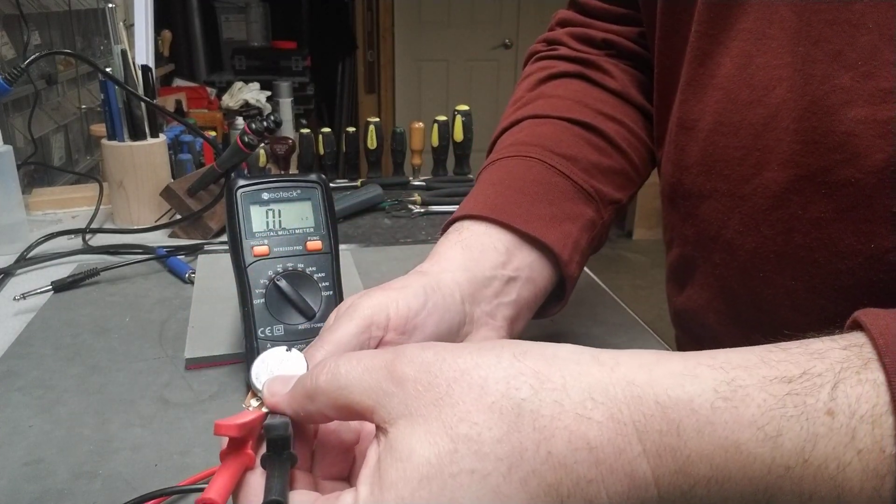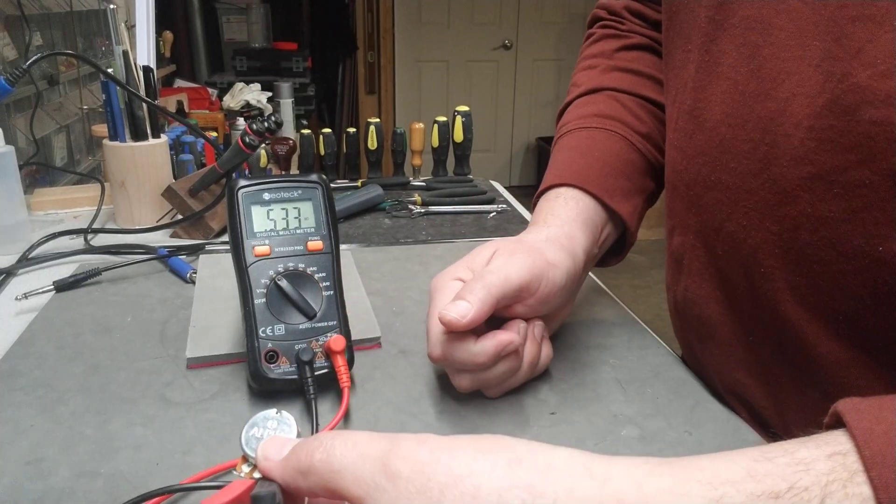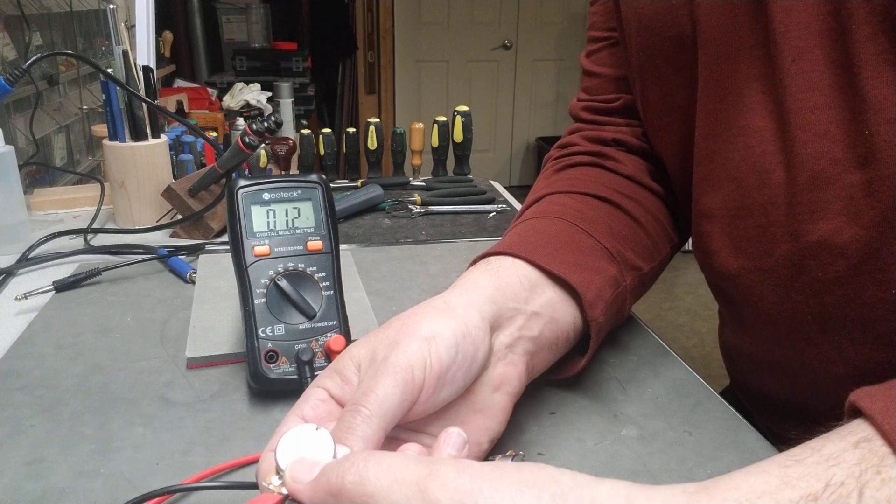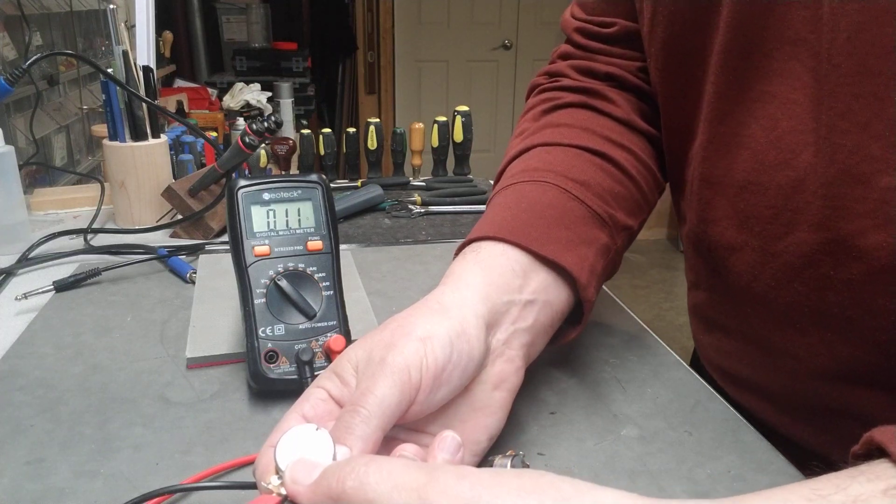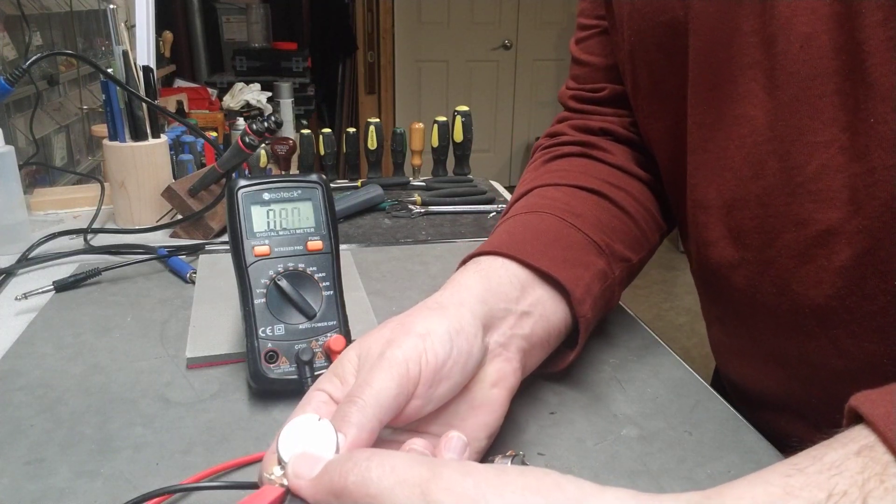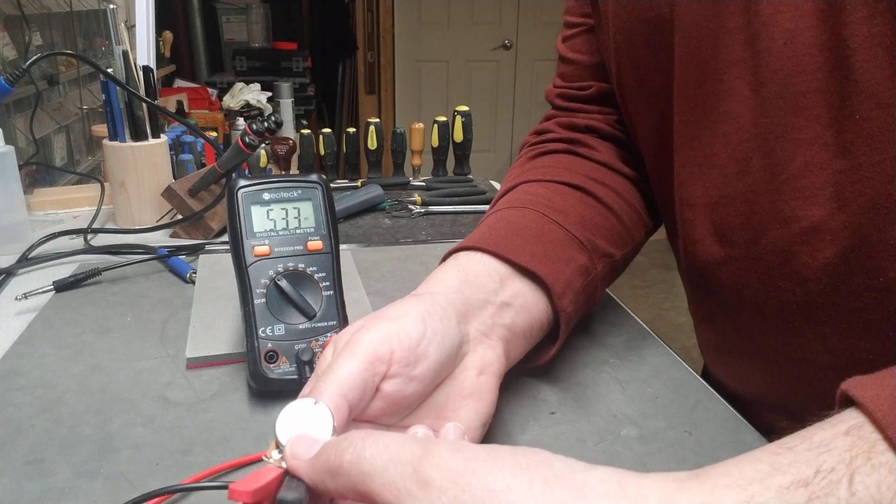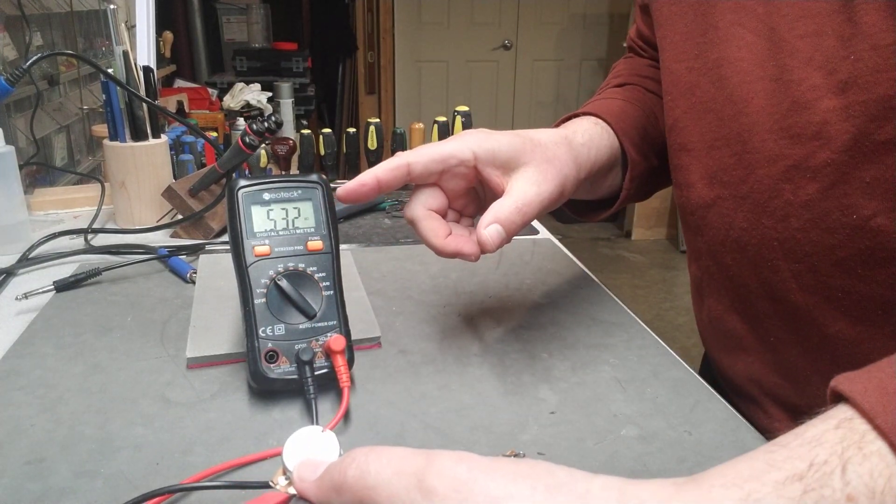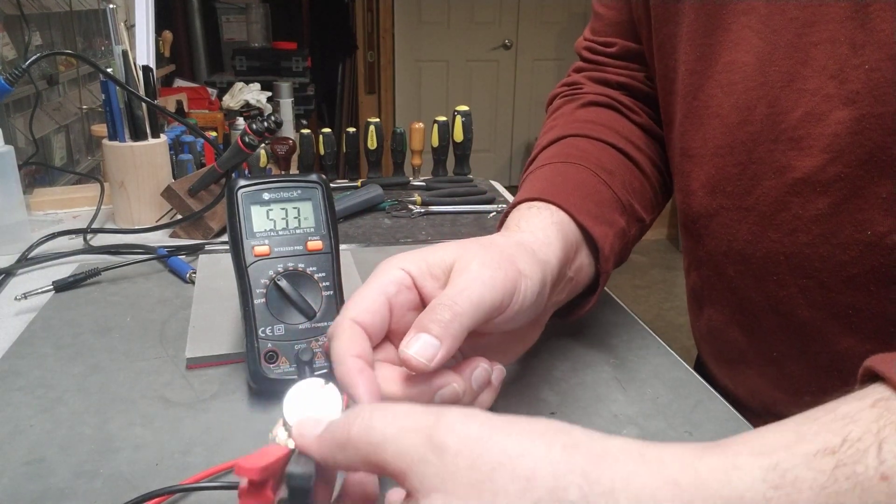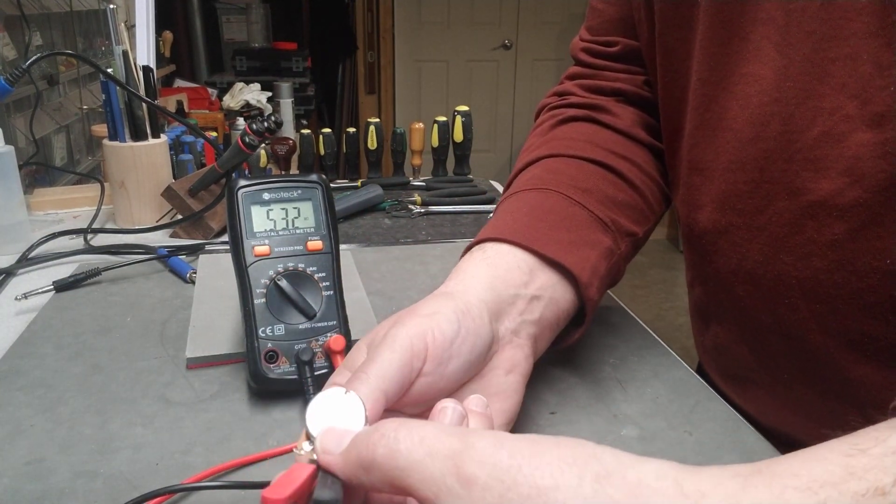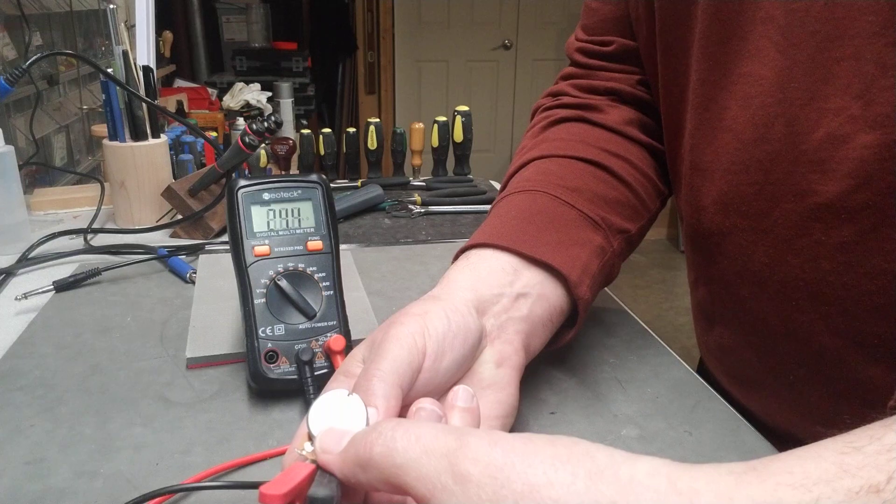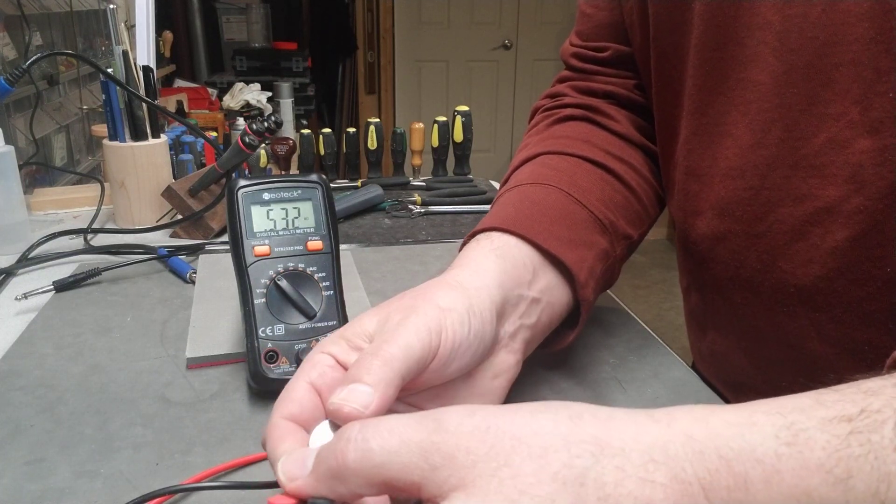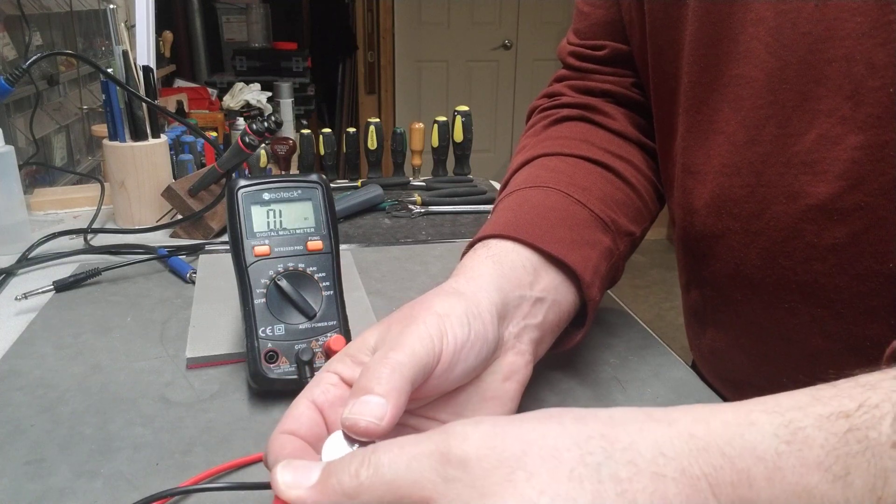Now if you spin around your pot, you can see the value change. So now we're at basically zero here. I'm going to turn it all the way up and we get to 532. So this is a 500K pot so it's a little hotter than 500 but that's okay. So that's how you test. This pot's working fine so I won't hesitate to use that.